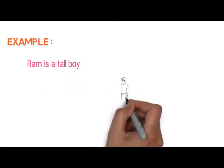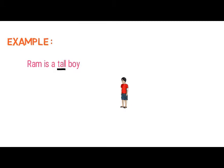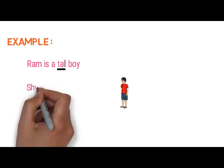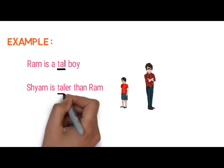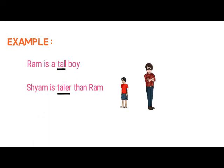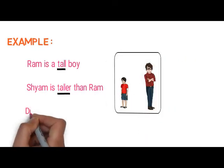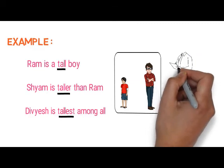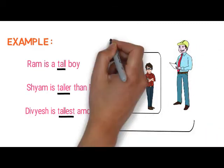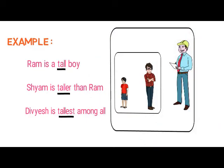Let's watch an example to understand degrees of adjectives. Rem is a tall boy — tall is an adjective, and we are only describing Rem, not comparing him with anyone else, so this is the positive degree. Sham is taller than Rem — taller is the adjective, and we are comparing two people's height, so it is the comparative degree. Divish is the tallest among all twelve of them — tallest is an adjective, and we are comparing more than two people's height, so it is the superlative degree.